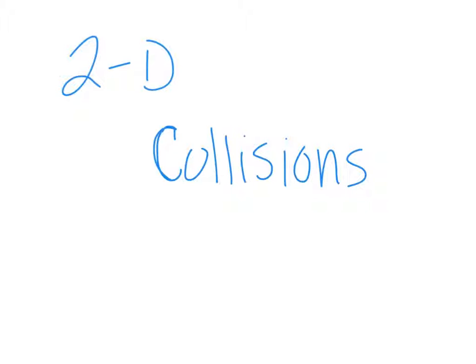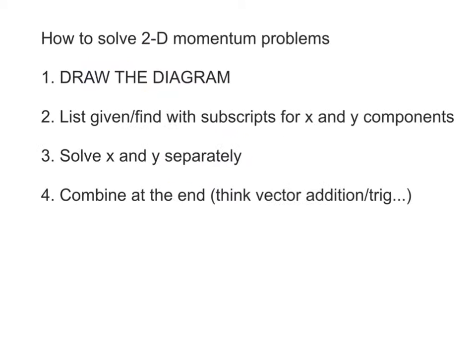You've seen the math in all of this before — it's just now applying it to momentum. So how do you solve two-dimensional momentum problems? First, you need to draw the diagram. Then, list given and find with subscripts for the x and the y components. You're going to solve for x and y separately, and then at the end combine. Remember what we did with vector addition and having to do a little bit of trig.